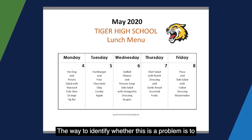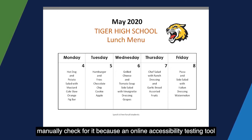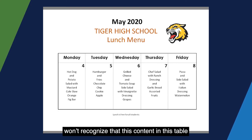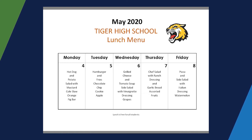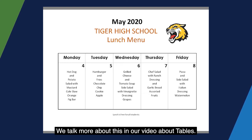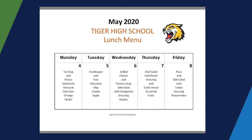The way to identify whether this is a problem is to manually check for it, because an online accessibility testing tool won't recognize that content in this table doesn't follow a logical reading order. We talk more about this in our video about tables.